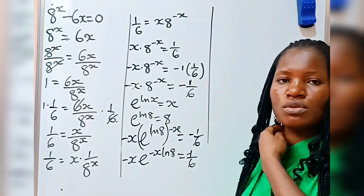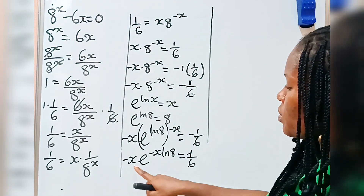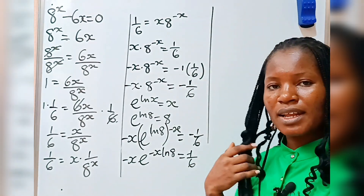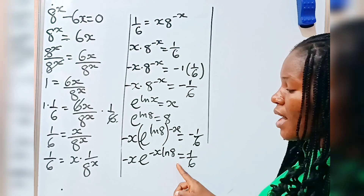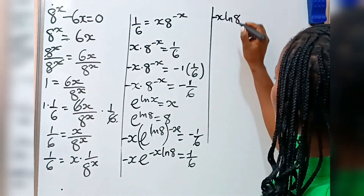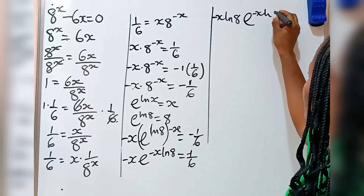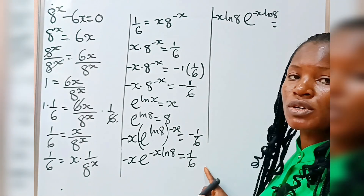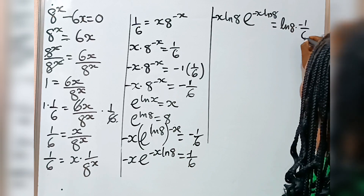Recall that using the Lambert W function, our power should be the same thing as what is multiplying our e. The difference between this and this is ln x. So in order to get ln x here, I am going to multiply both sides by ln x. So I am going to have minus x multiplied by ln x, then e to the power of minus x ln x is equal to ln x multiplied by minus 1 over 6.